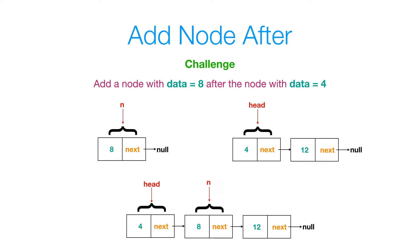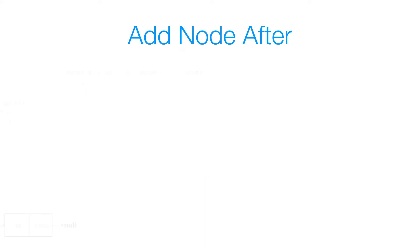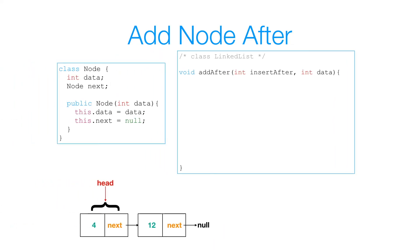Now I challenge you to add a node after some given node in a list. Suppose I want to add the node with data 8 after the node with data 4 — the resulting linked list is shown at the bottom. The method is called addAfter and has two parameters: insertAfter, which is the node I want to insert after (in this case the node with data 4), and the data I want to insert (in this case 8). Pause the video and press play when you're ready to see the solution.